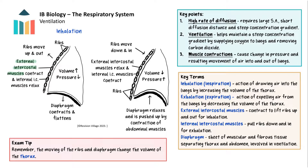During inhalation, the external intercostal muscles contract while the internal intercostal muscles relax, lifting the ribs up and out. At the same time the diaphragm contracts and flattens downwards, enabled by the abdominal muscles relaxing to make space. This raising of the ribs and flattening of the diaphragm increases the volume inside the thorax. The lungs follow the thorax because the pleural membranes adhere the two together. As volume increases, pressure decreases, so air containing higher levels of oxygen rushes into the lungs down the pressure gradient.